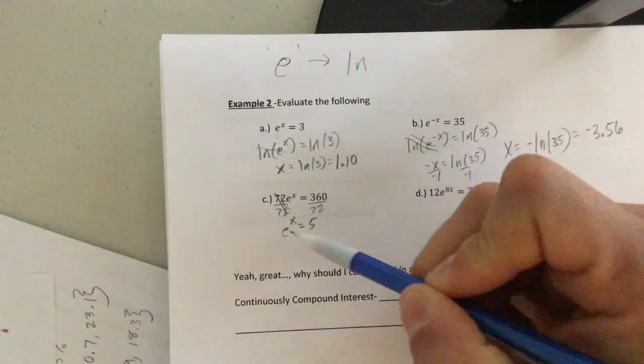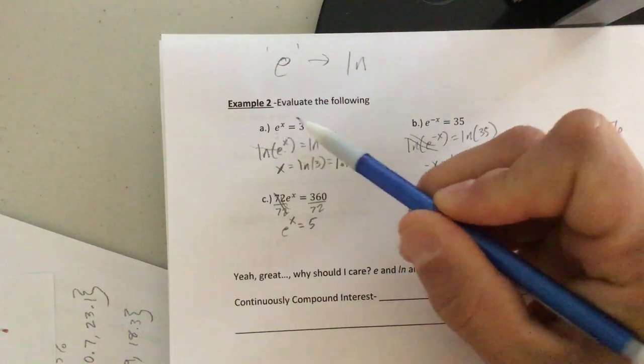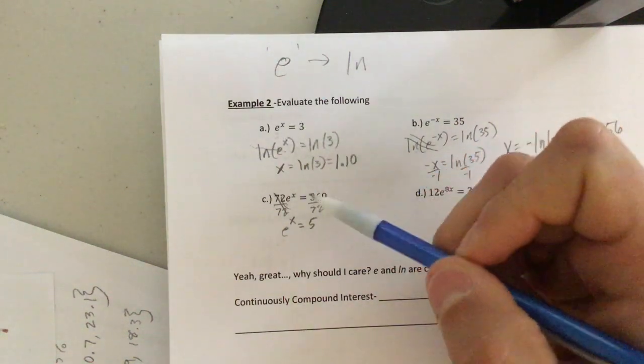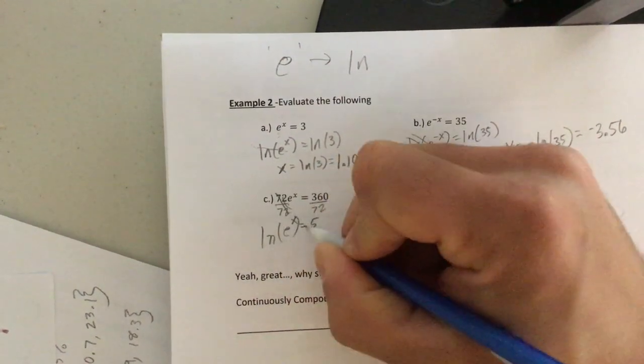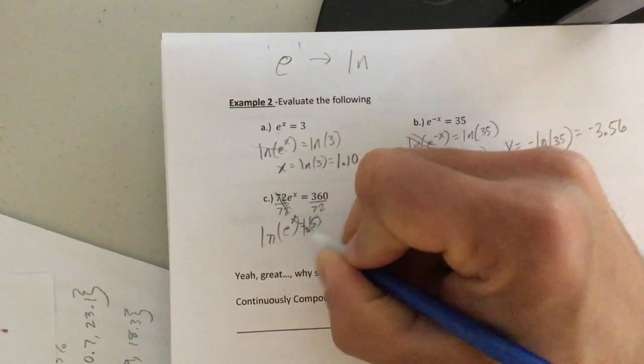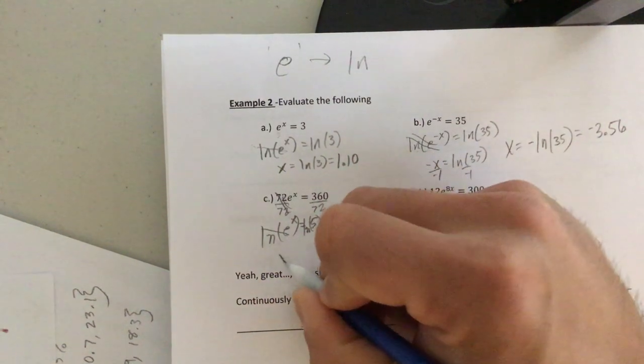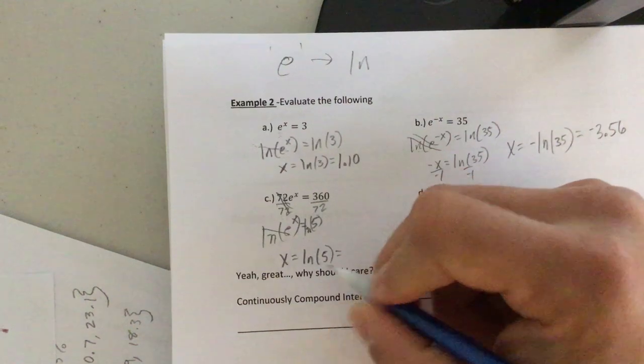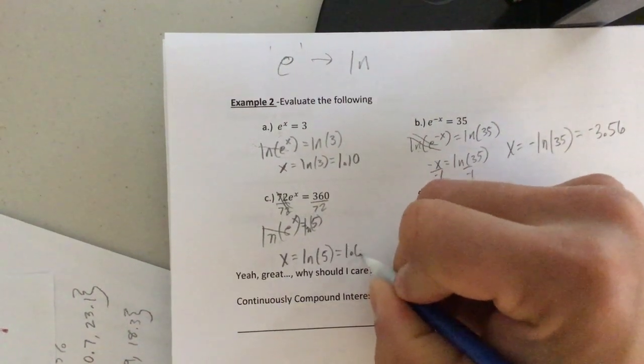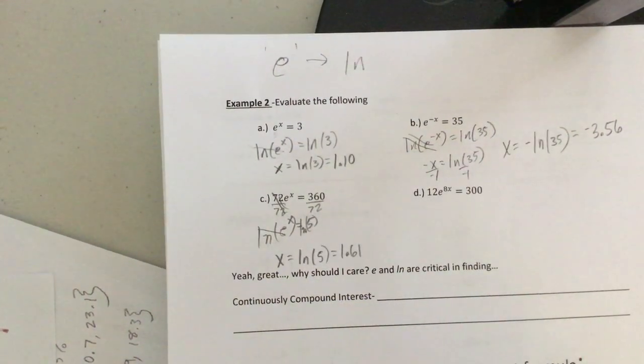And now look, what we have here is exactly what we had here, just with a 5 in place of the 3. So I'm going to take the natural log of both sides. The E and the natural log cancel. X equals the natural log of 5. Or to the nearest hundredth, 1.61. Okay.